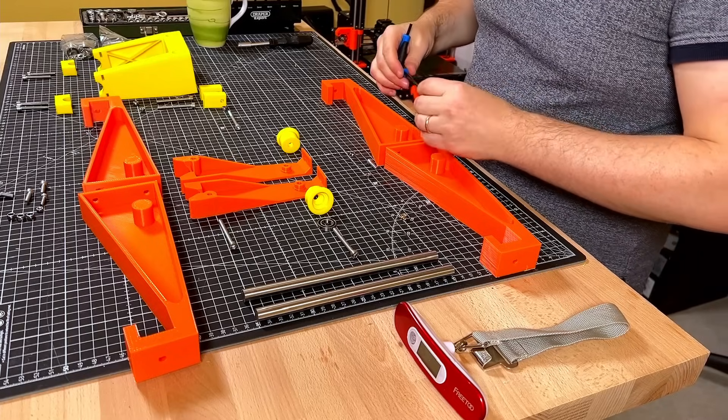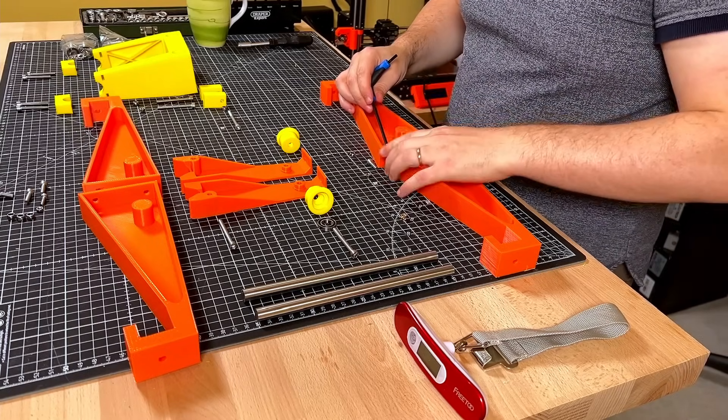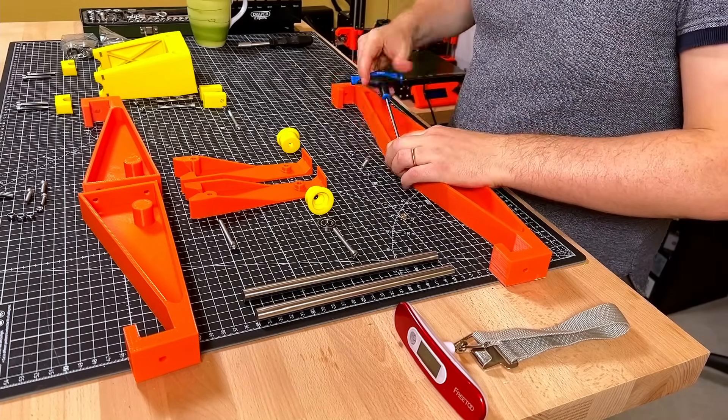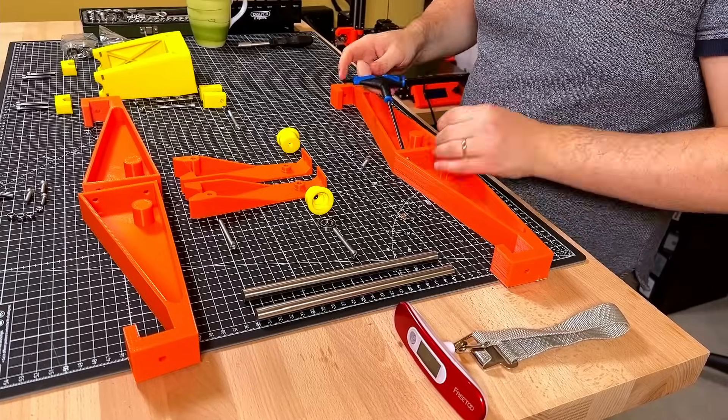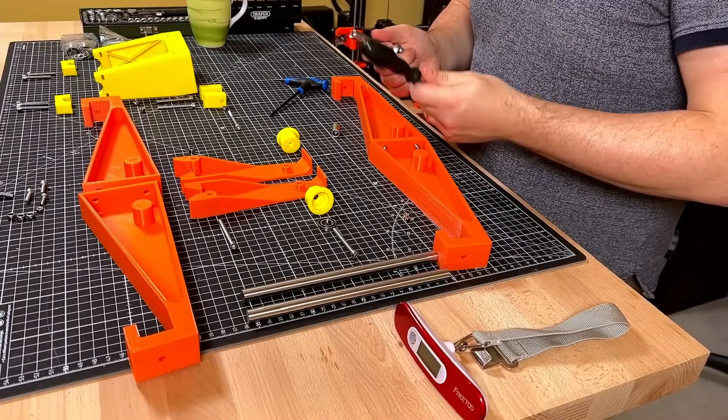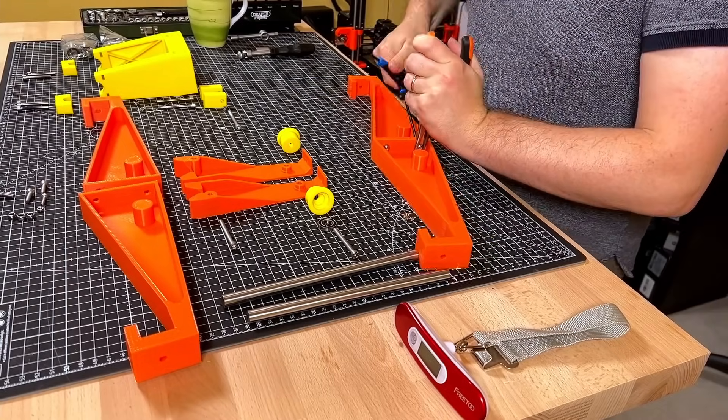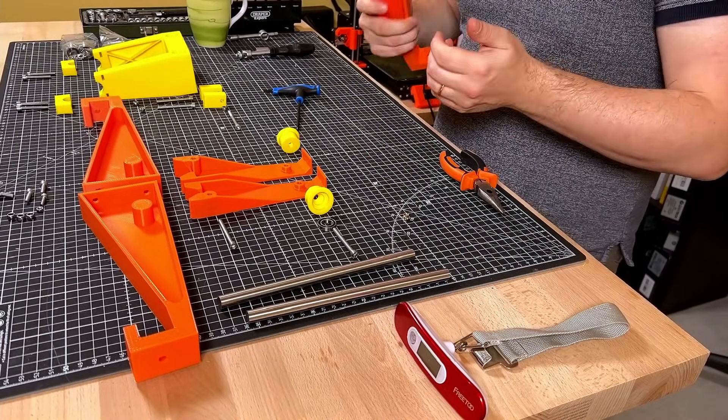First, we're going to connect together the gantries with some screws. Right, well, that's not going to work, is it? Lovely jubbly, solid with anything.